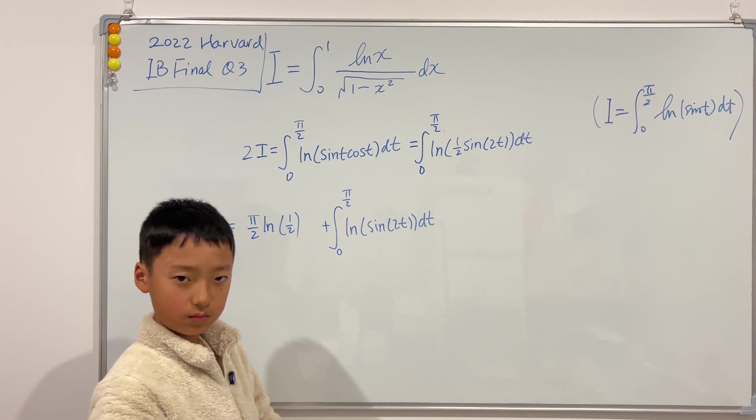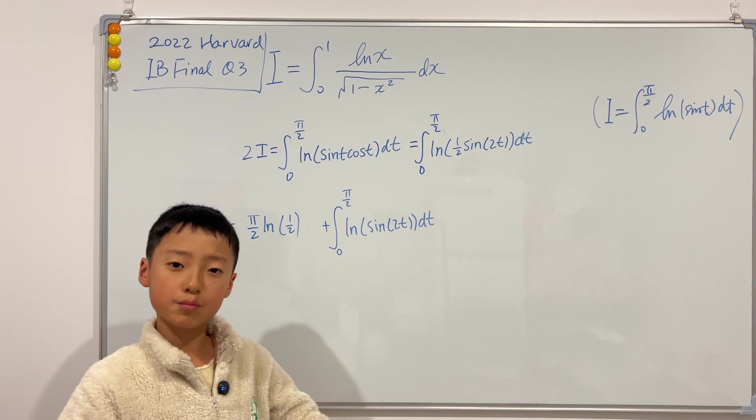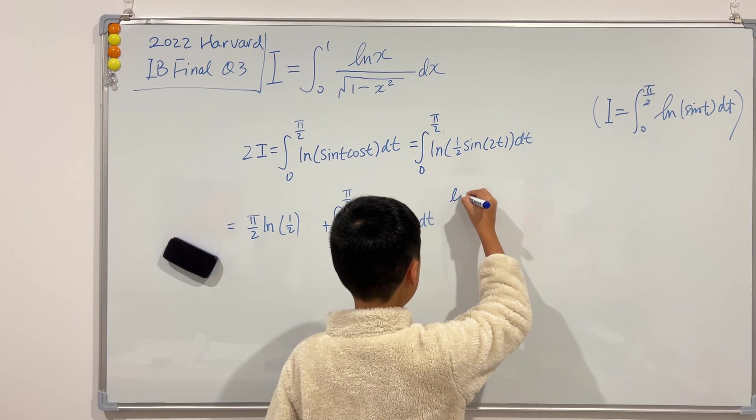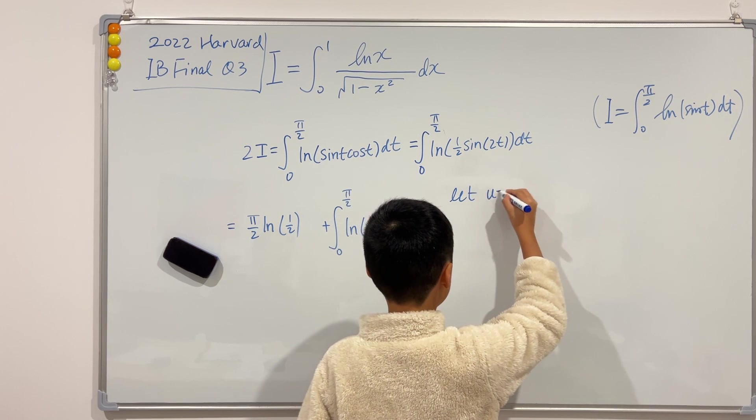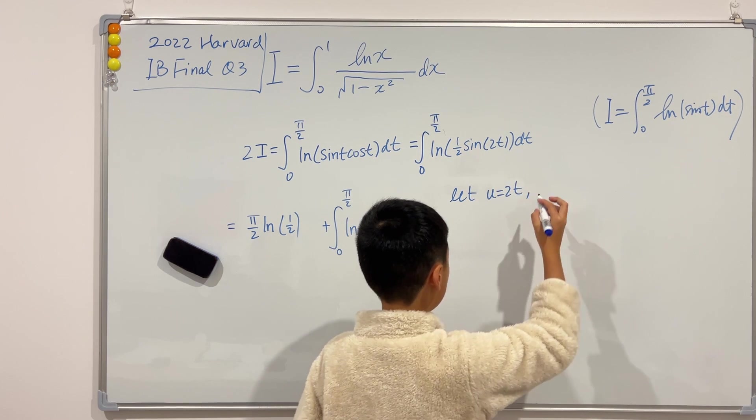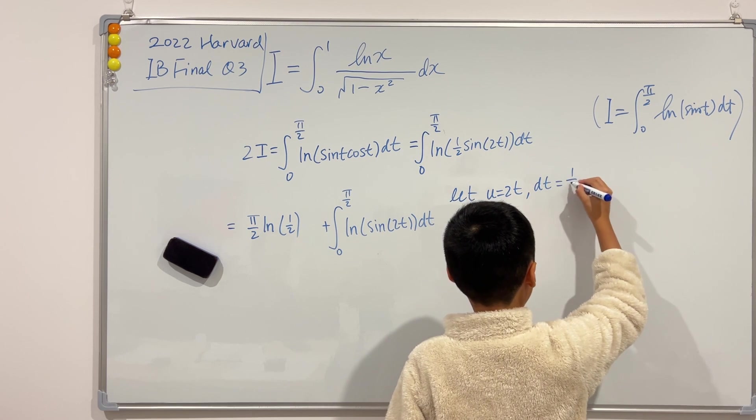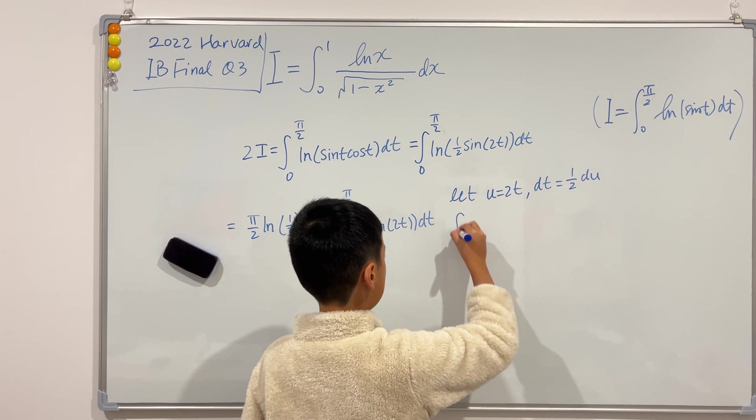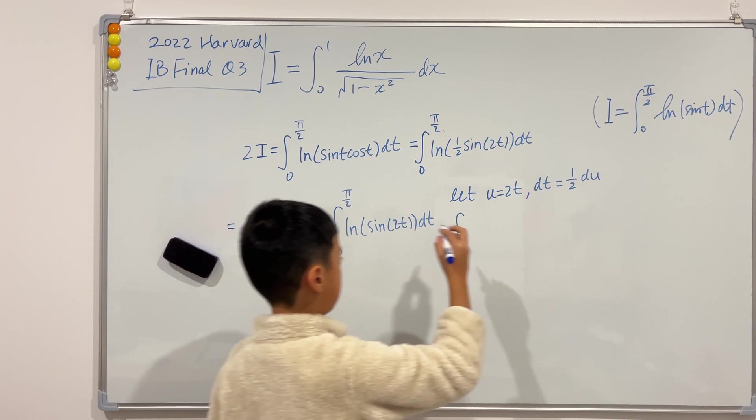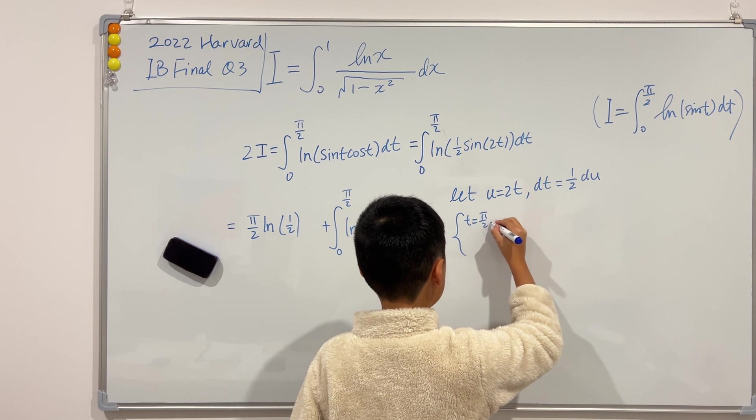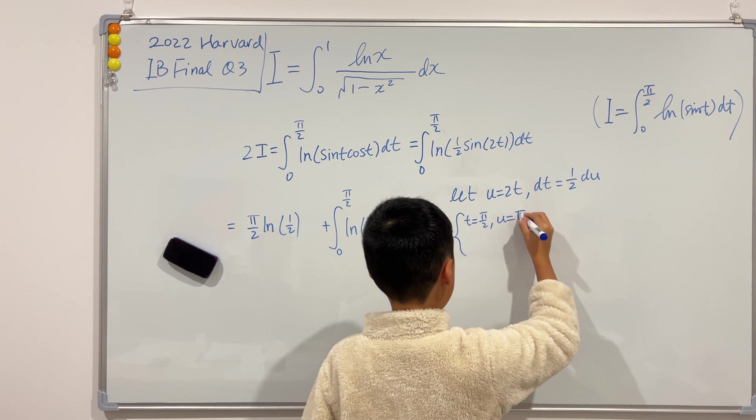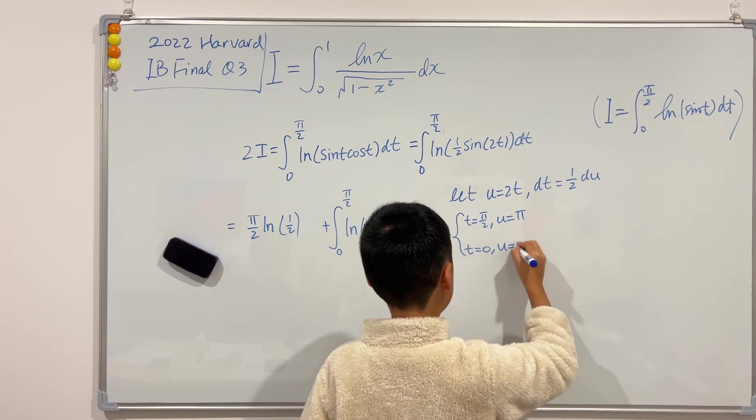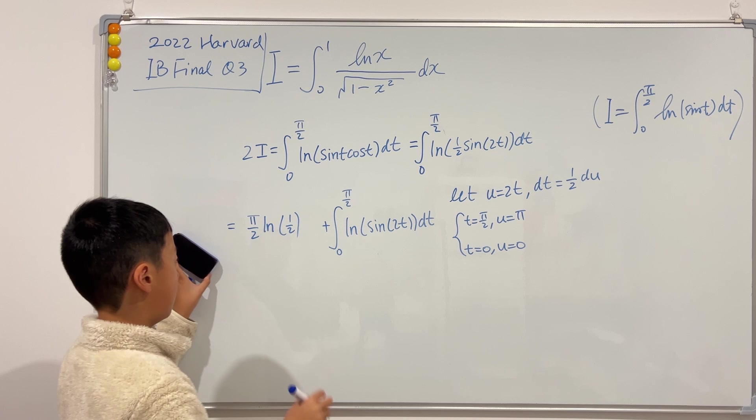Now what do we do here? Well, we can do a very simple u-sub. Just let u to be 2t. So if I let u to be 2t, then we see dt is just 1 over 2 du. And if we do the bounds, when t is equal to π over 2, u is π, and when t is equal to 0, u is 0.